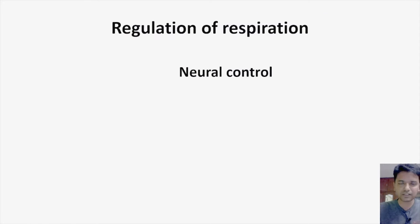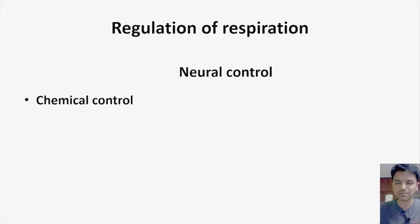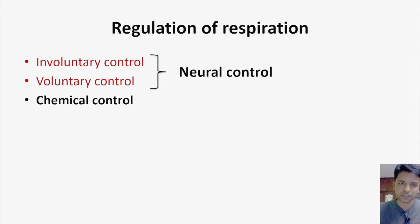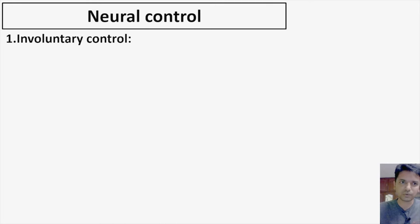As discussed in the prior video, regulation of respiration can be done by two mechanisms: one is by a neural mechanism, another one is by a chemical mechanism. Chemical mechanism we have already discussed. In neural control, there are two types: one is called involuntary control, another one is called voluntary control.